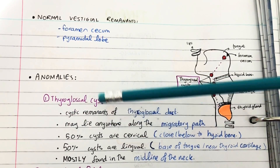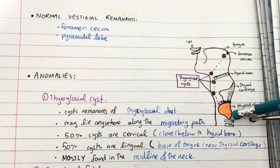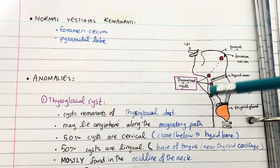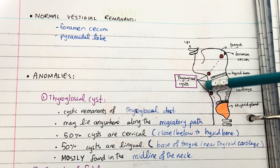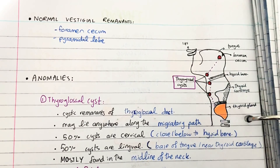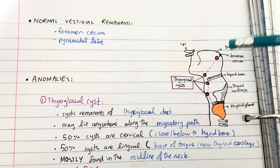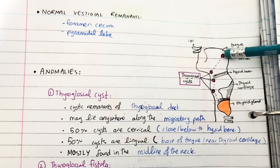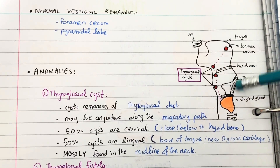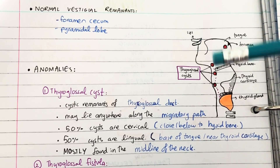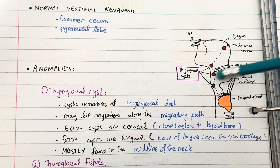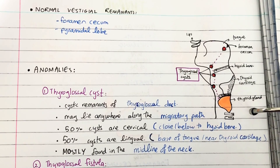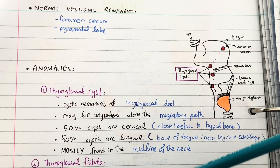The major anomaly is thyroglossal cysts. These cystic remnants of the thyroglossal duct remain behind and cause problems. They can occur anywhere along the migratory or descending path of the thyroid gland. Fifty percent of the cysts are cervical, meaning close to or below the hyoid bone, and fifty percent are lingual, near the thyroid cartilage and the base of the tongue. Most are found in the midline of the neck.